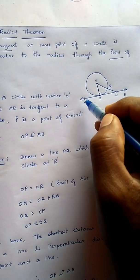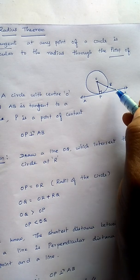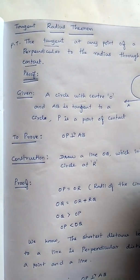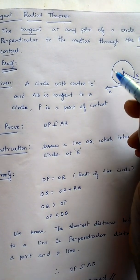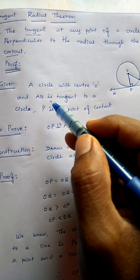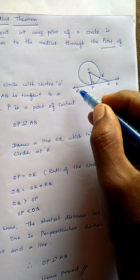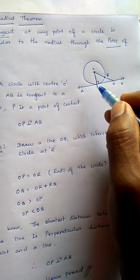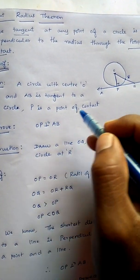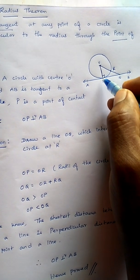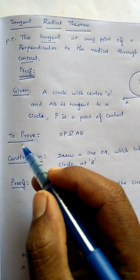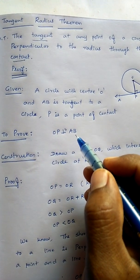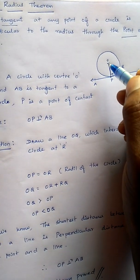For this proof, we are taking this construction. Let's see the given data: a circle with center O, and AB is tangent to the circle. P is the point of contact. What we have to prove? OP perpendicular to AB. So OP is the radius here, radius through the point of contact.